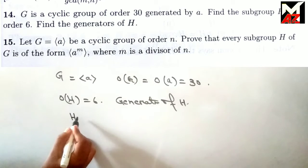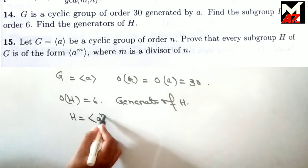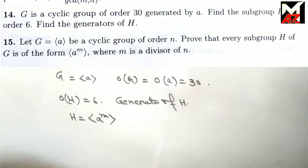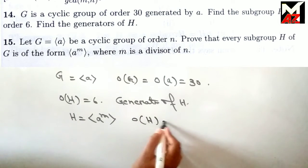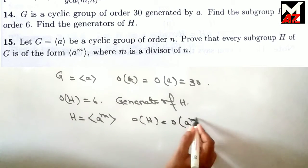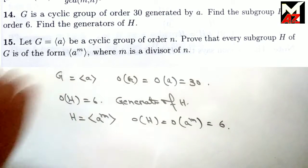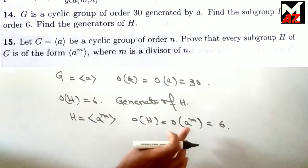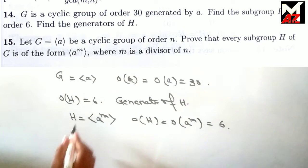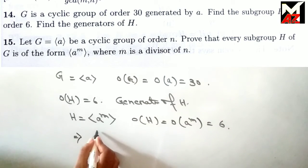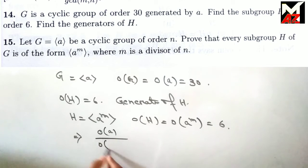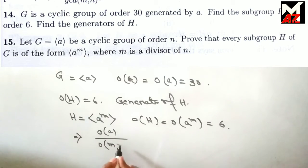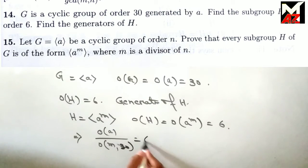Let H be generated by A^M. Since order of H = order of A^M = 6, and by the theorem order of A^M = order of A / GCD(M, 30) = 30 / GCD(M, 30). Setting this equal to 6 gives GCD(M, 30) = 5.